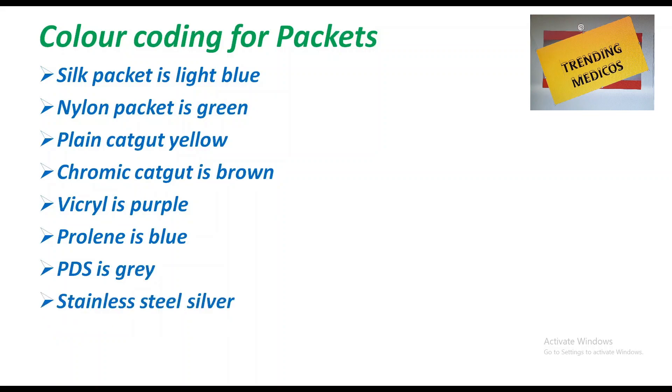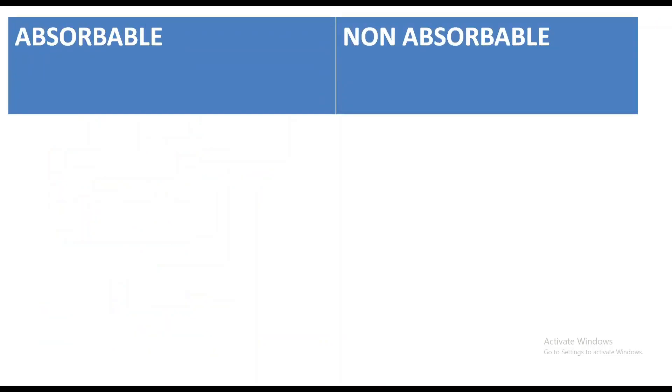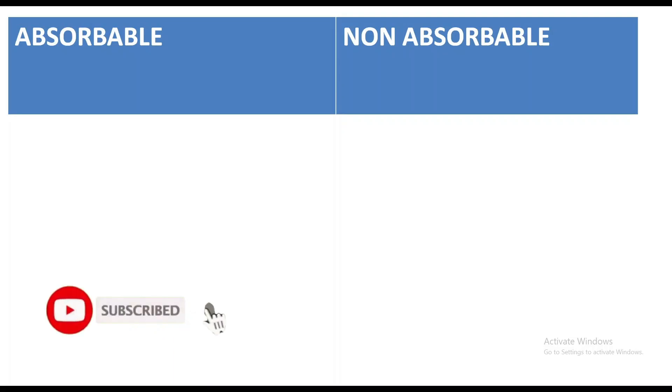Continuing with packet color coding: PDS is gray, stainless steel is silver, and Ethibond is orange. Now there is one more classification in which sutures are classified as absorbable and non-absorbable.